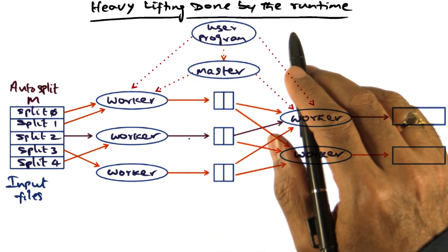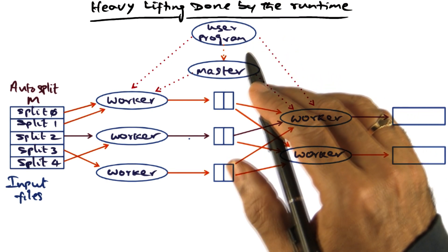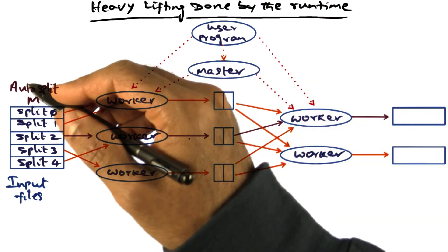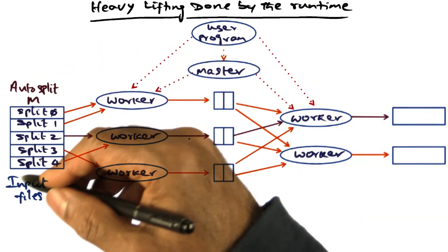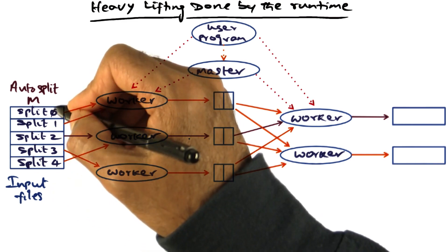The app developer writes this map function and reduce function and instantiates the programming library by calling MapReduce. The programming library splits the input files provided by the user, that is the key value space, into m splits.